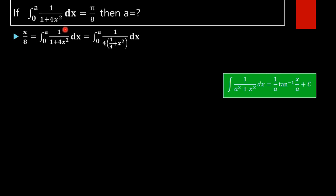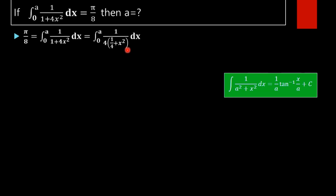So let us first take π/8 equal to the integral from 0 to a of 1/(1 + 4x²) dx. Now taking 4 outside, we will get 1/4 times the integral of 1/(1/4 + x²) dx.